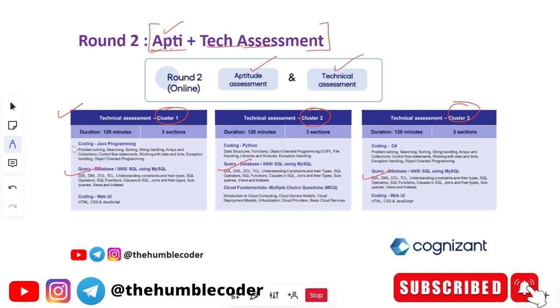Then comes your coding part which is specific to your cluster which you have selected. If you have selected Java programming so you will get problems on that, and then Python and then C sharp. We have three different clusters.